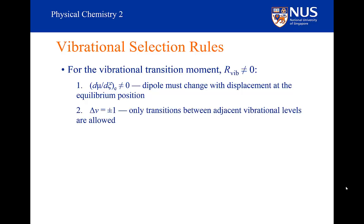The second selection rule is the specific selection rule. This is that the change in the vibrational quantum number, delta v, must be plus or minus 1. Therefore, I can go from v equals 0 to v equals 1, but I cannot go from v equals 0 to v equals 2. Similarly, I can go from v equals 1 to v equals 2, but not from v equals 1 to v equals 3. So we can only have transitions between adjacent vibrational levels.